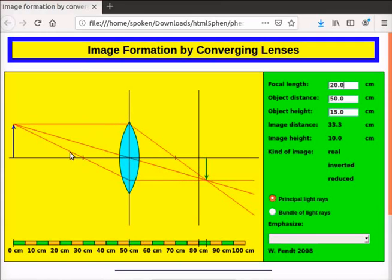A third ray passes through the first principal focus. This ray, after refraction, is parallel to the principal axis. The image is formed at point of intersection of the three rays.